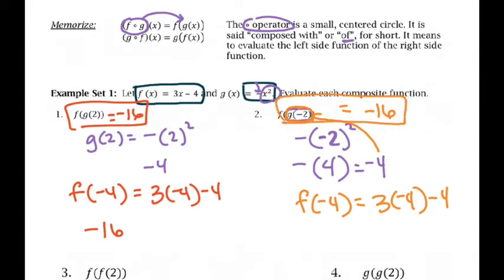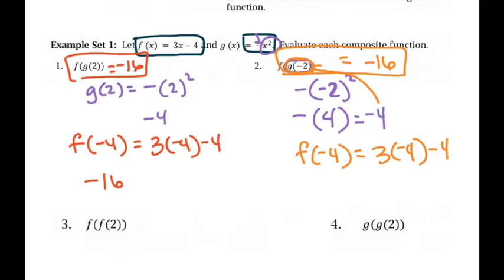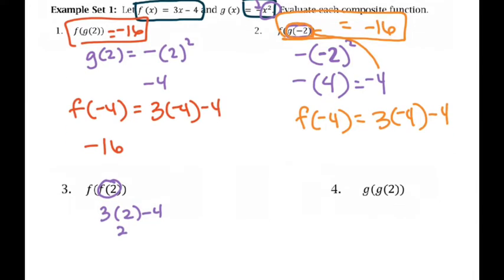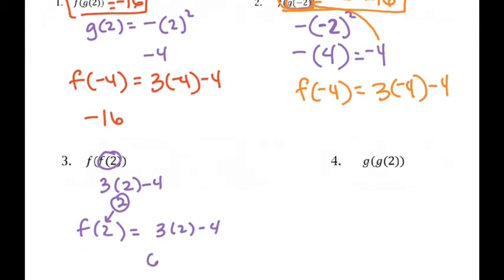You notice it has the same answer as the last one, but you don't really notice that they're necessarily the same. It's kind of like if you have 3 plus 2 — it's the same as 1 plus 4 — and that doesn't necessarily mean there's some magic trick to knowing that; it's just something that happens. The next one we're going to do is f of f of 2. We're going to find f of 2, which is 6 minus 4, so that's 2. Then I'm going to find f of that 2, which is also going to be 2. So f of f of 2 is 2. Don't try to look for some magic pattern in that — that's just coincidence.